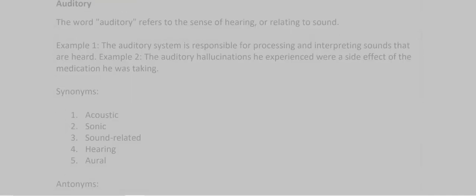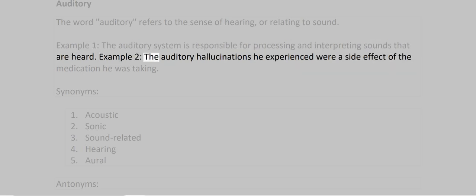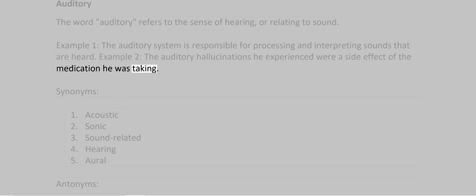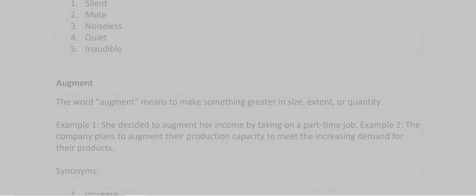Auditory. The word auditory refers to the sense of hearing or relating to sound. Example 1: The auditory system is responsible for processing and interpreting sounds that are heard. Example 2: The auditory hallucinations he experienced were a side effect of the medication he was taking. Synonyms: 1. Acoustic 2. Sonic 3. Sound-related 4. Hearing 5. Aural. Antonyms: 1. Silent 2. Mute 3. Noiseless 4. Quiet 5. Inaudible.